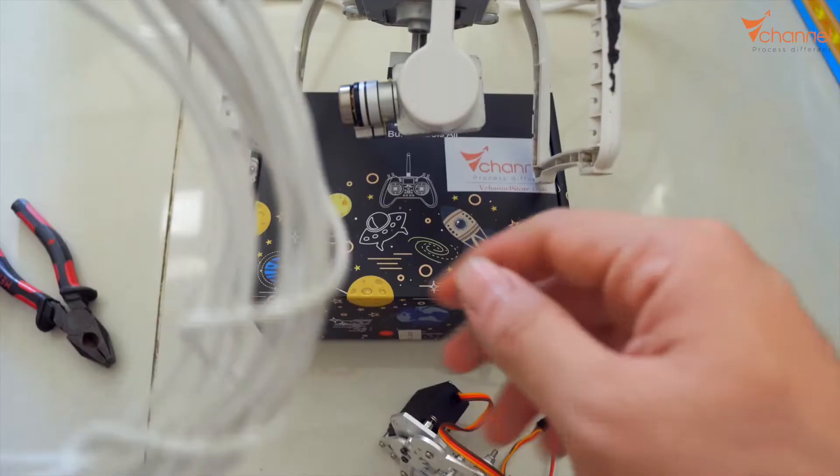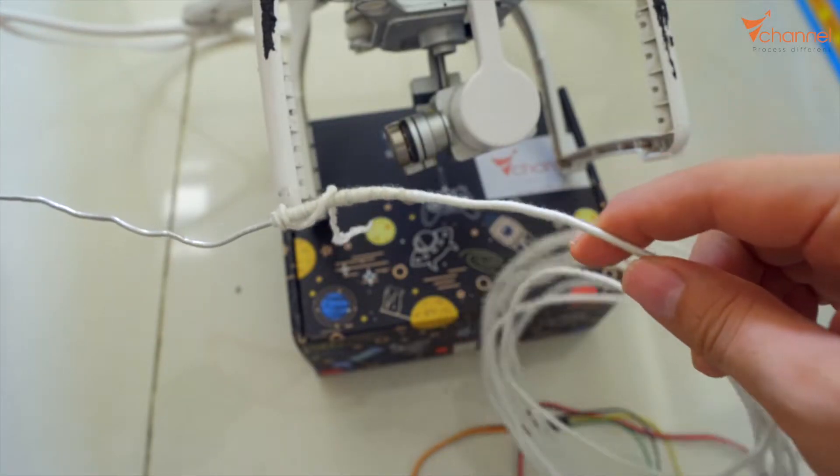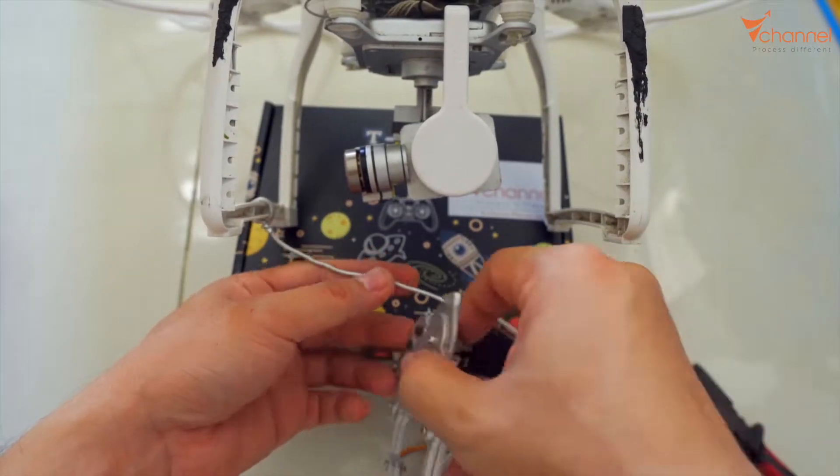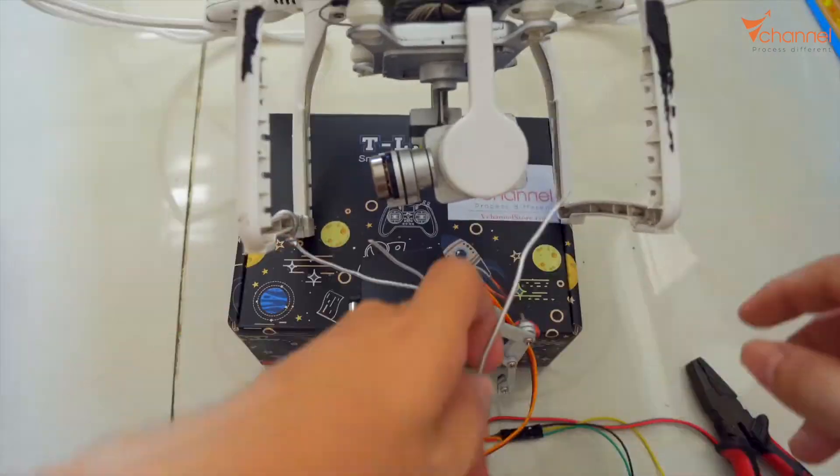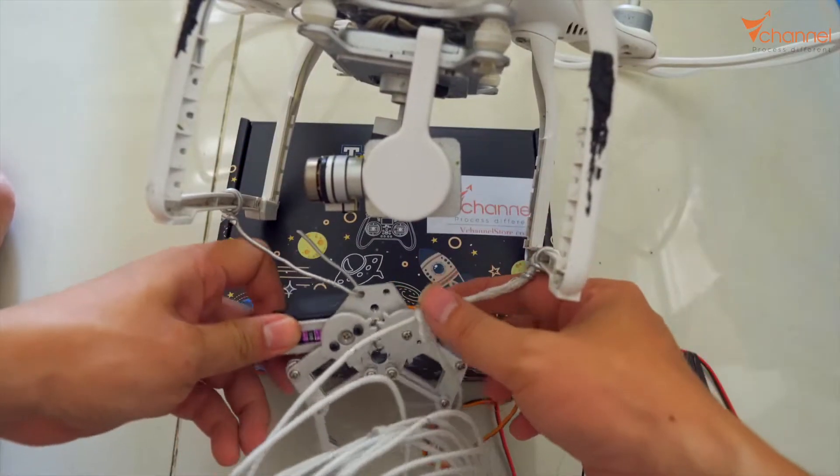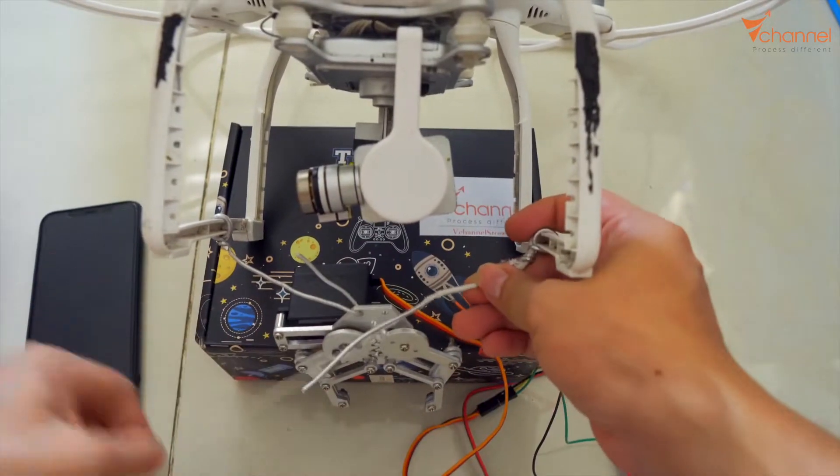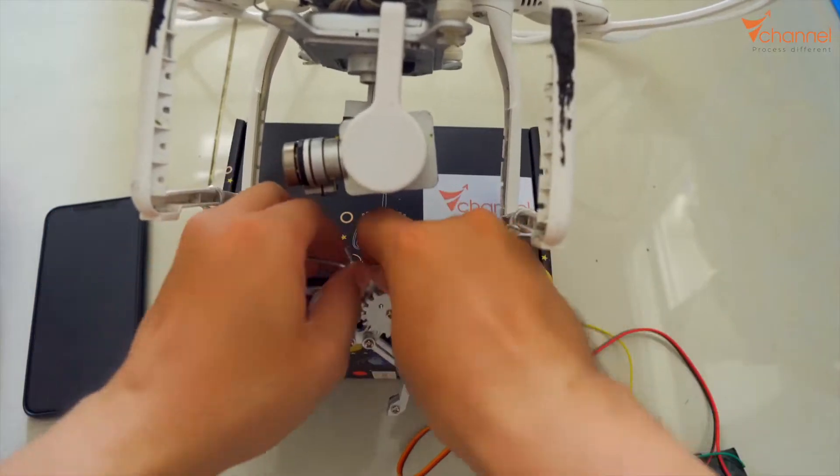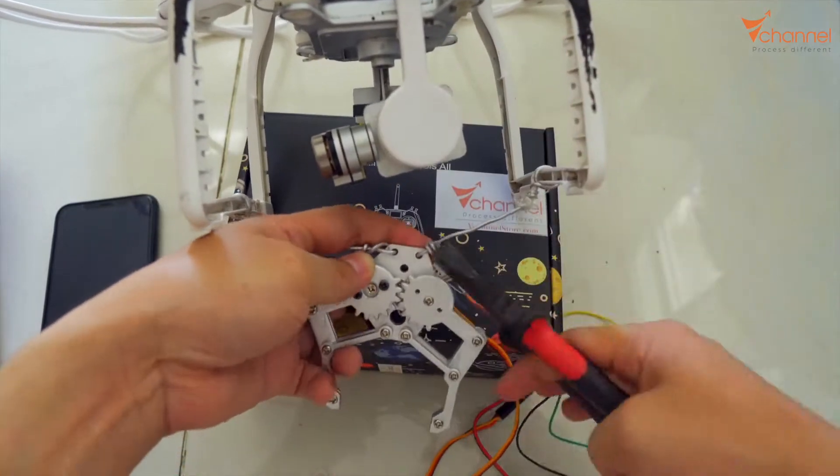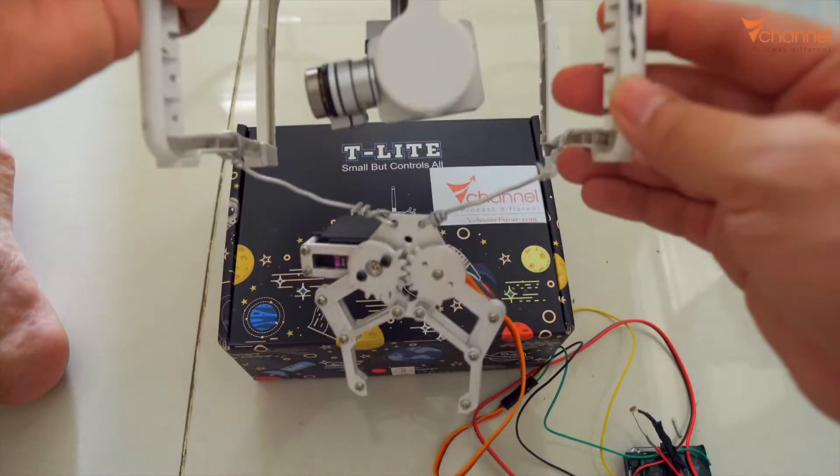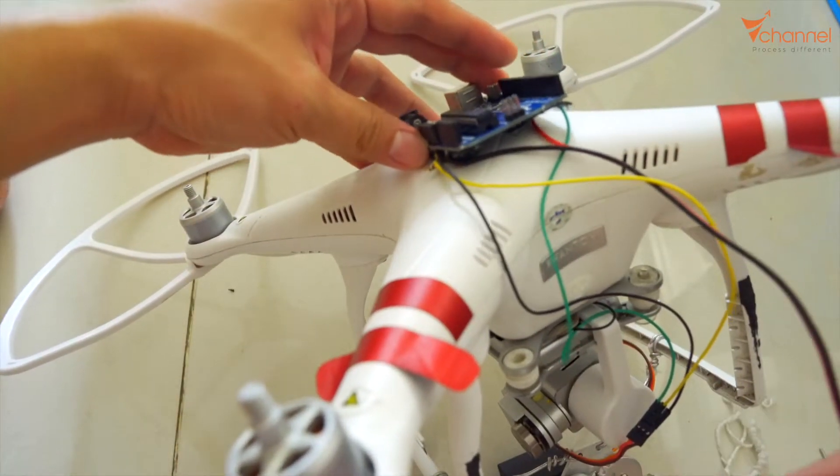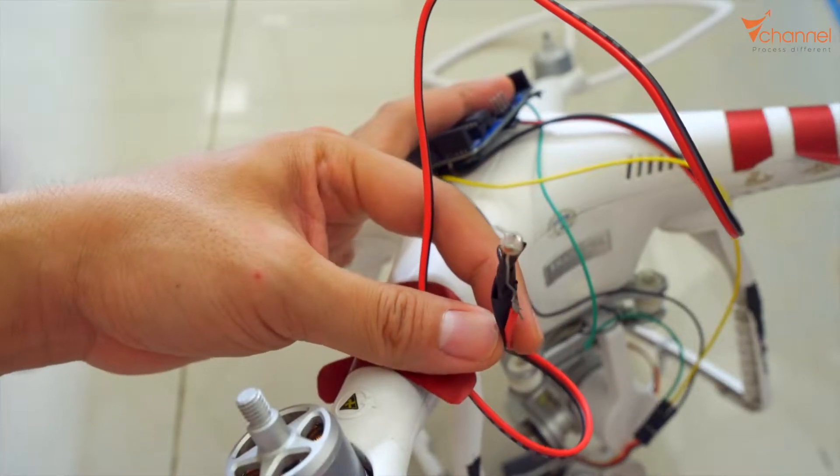Now I put the robot arm on the drone by aluminum wire. Now we continue with the circuit board. I will glue it like this. If you are tidy, you can push this circuit board inside the drone and use the drone battery as well.